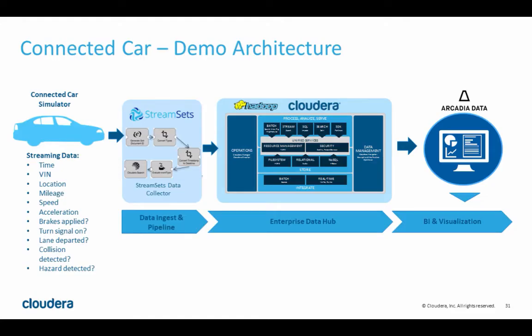So what we have here for the basic overview of our architecture is a data generator that's generating simple connected car-like data. What you're going to see is a timestamp, the VIN numbers as a unique identifier for the vehicle, the coordinate location of the vehicle from the GPS, the vehicle mileage, the current speed of the vehicle, and some accelerometer readings — both acceleration and braking and also handling in different directions.